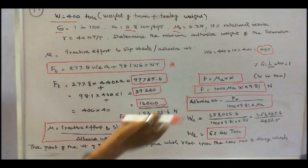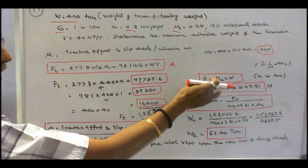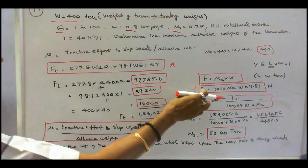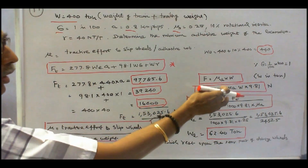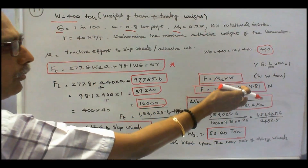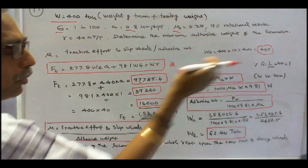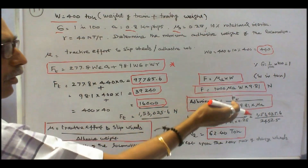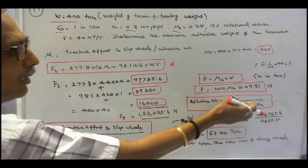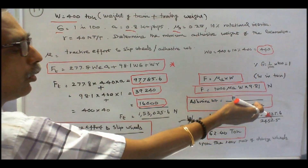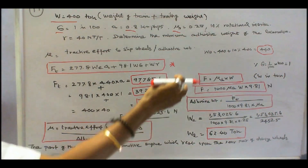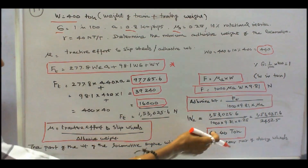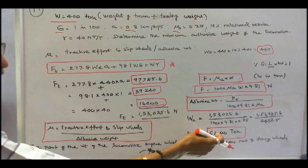Now F equals coefficient of aggregation into dead weight. Rewriting: F equals 1000 into coefficient of aggregation into dead weight into 9.81. Therefore, adhesive weight equals Ft divided by 1000 into 9.81 into coefficient of aggregation. Substituting all known values, adhesive weight equals 62.40 tons.